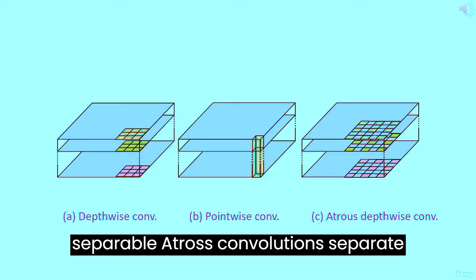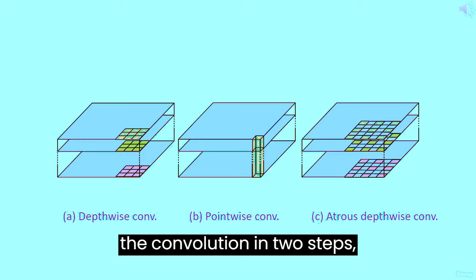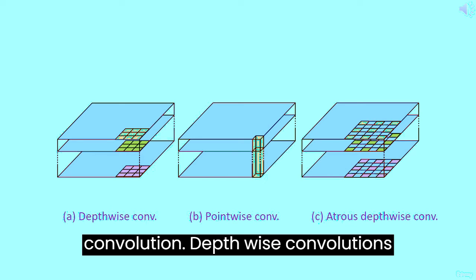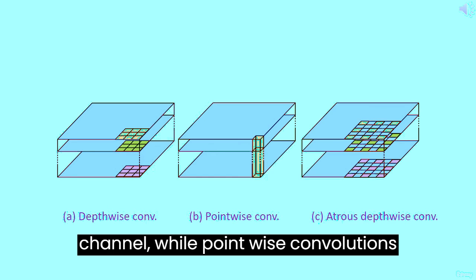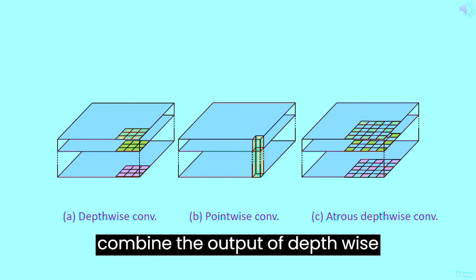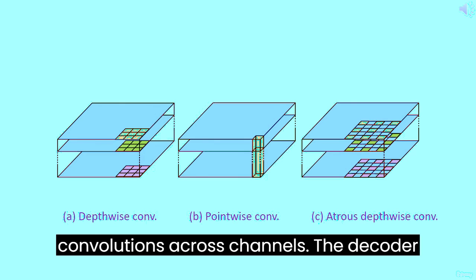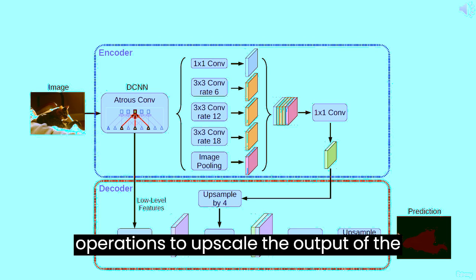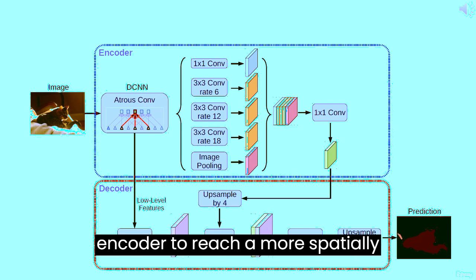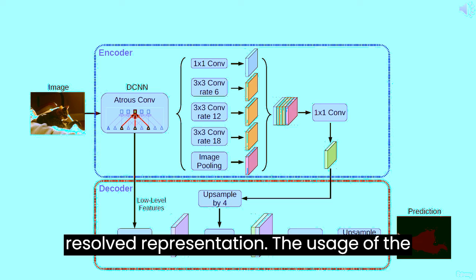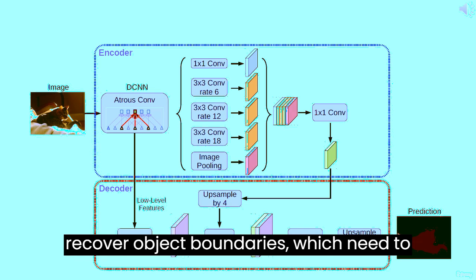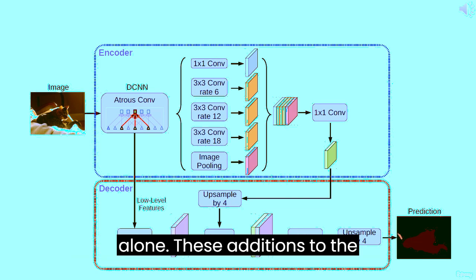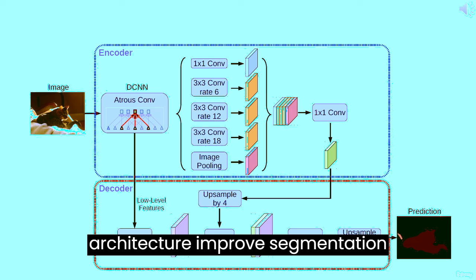Separable atrous convolutions separate the convolution into two steps: depth-wise convolution and point-wise convolution. Depth-wise convolutions apply different filters to each input channel, while point-wise convolutions combine the output of depth-wise convolutions across channels. The decoder is a somewhat simple architecture, consisting mainly of upsampling operations to upscale the encoder output to a more spatially resolved representation. The decoder is motivated by the need to recover object boundaries, which cannot be made precise by the encoder alone. These additions to the architecture improve segmentation performance.